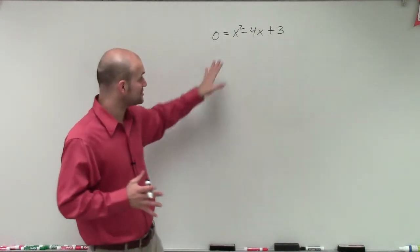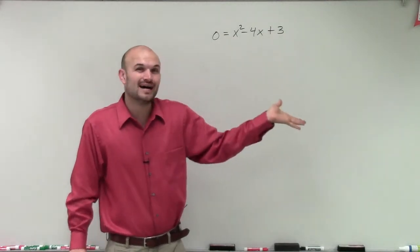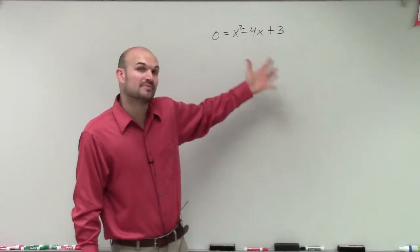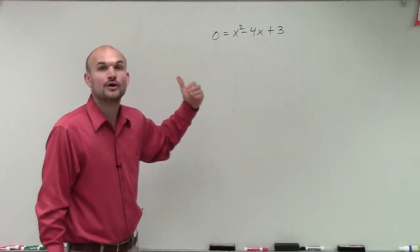Therefore, we can use inverse operations. Right now we have x squared and x. We can't combine them, nor can we isolate them because there's two of them. So we're going to rewrite this into vertex form.